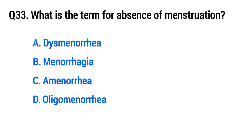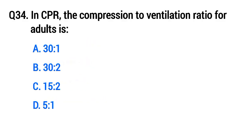Question 33: What is the term for absence of menstruation? The right option is C, amenorrhea.